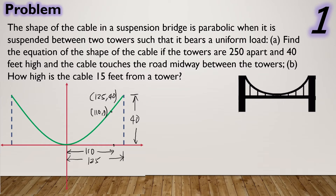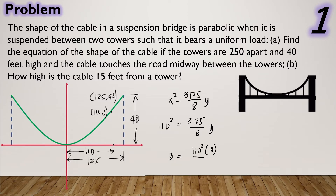From the equation obtained in letter A, x² = (3,125/8)y. If we substitute x = 110, we can solve for the value of y. So we have 110² = (3,125/8)y. Then y = 110² × 8 divided by 3,125. Using our calculator, we can solve for the value of y as equal to 30.976 feet.